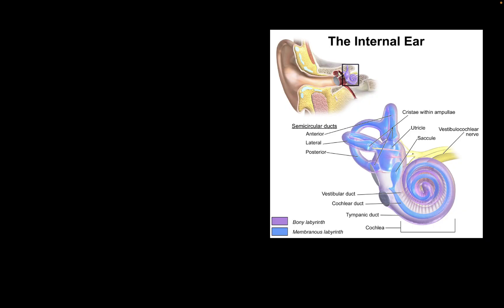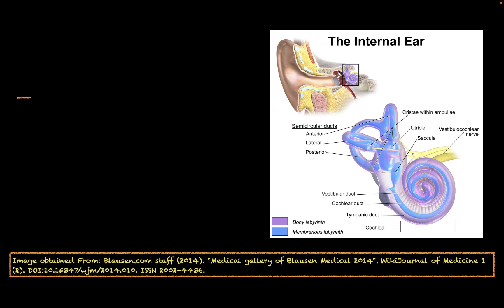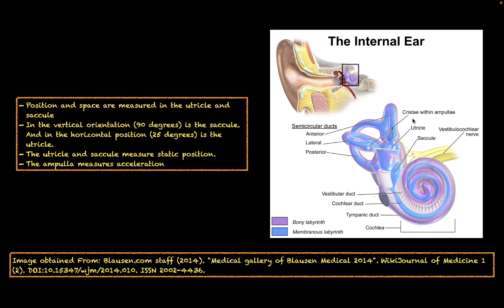We have a number of regions inside our internal ear that basically measure our sense of balance. The first regions are going to be the utricle and saccule. The saccule is oriented in the vertical direction at 90 degrees, and the utricle is oriented in the horizontal position at 25 degrees. The utricle and saccule basically measure static positions. The next regions are the ampullae — enlarged regions on the semicircular canals that measure acceleration.